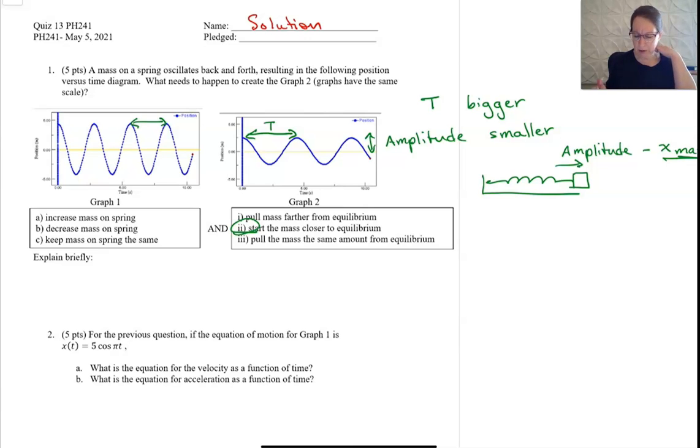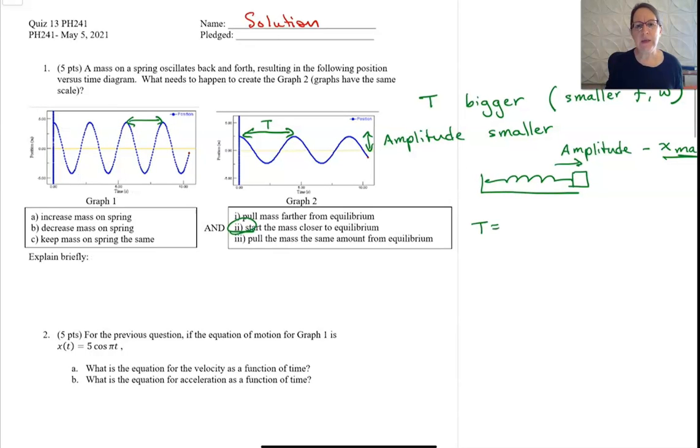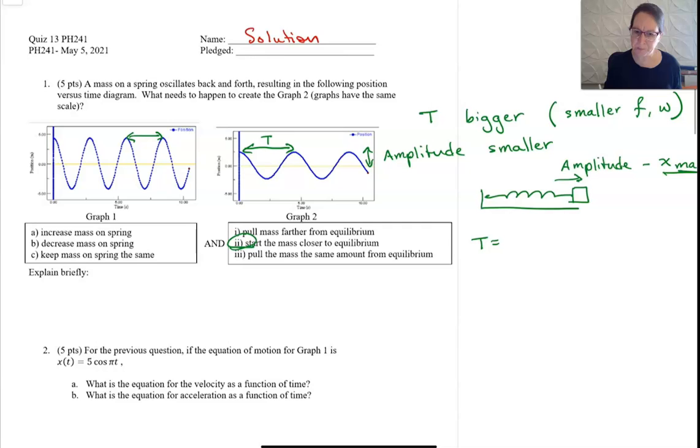For a bigger period or smaller frequency or omega, you can look at your equation. T is equal to 2π square root of m over k.